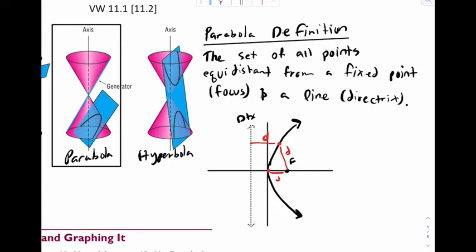Same thing here. This distance, let's call that d2, would equal this distance d2. And let's say you pick this point over here. This distance d3 would be the same as that distance d3. So that's how we define a parabola.